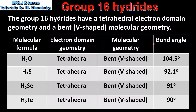Next we have the bond angle. Starting with water, which has a bond angle of 104.5 degrees. As we go down the group we can see that the bond angle decreases. H2S has a bond angle of approximately 92.1 degrees, H2Se is 91 degrees, and H2Te is 90 degrees.